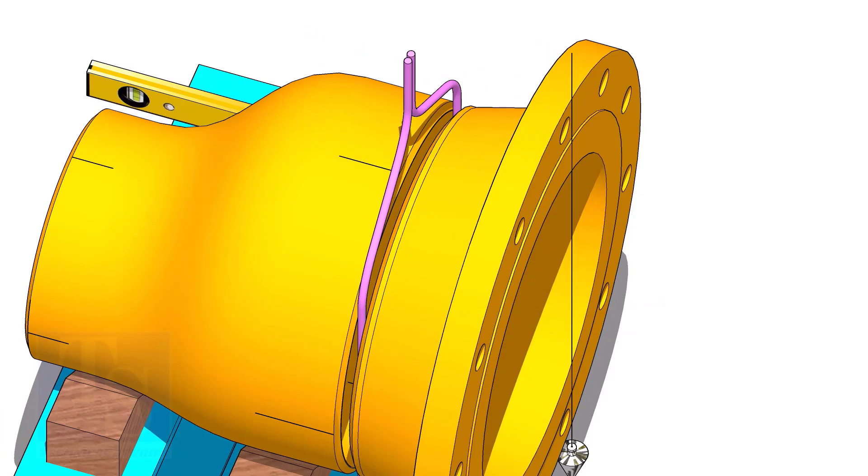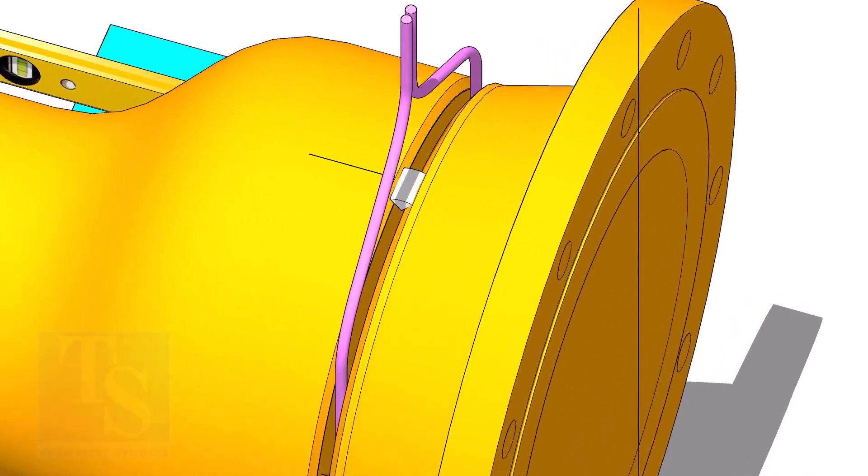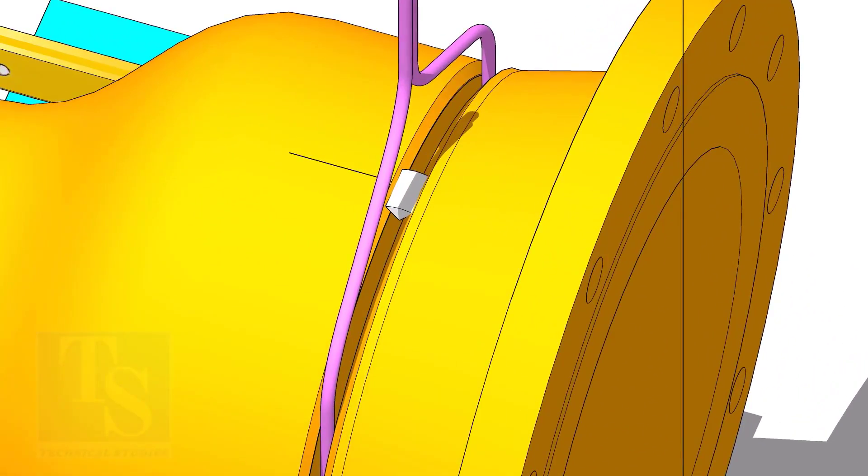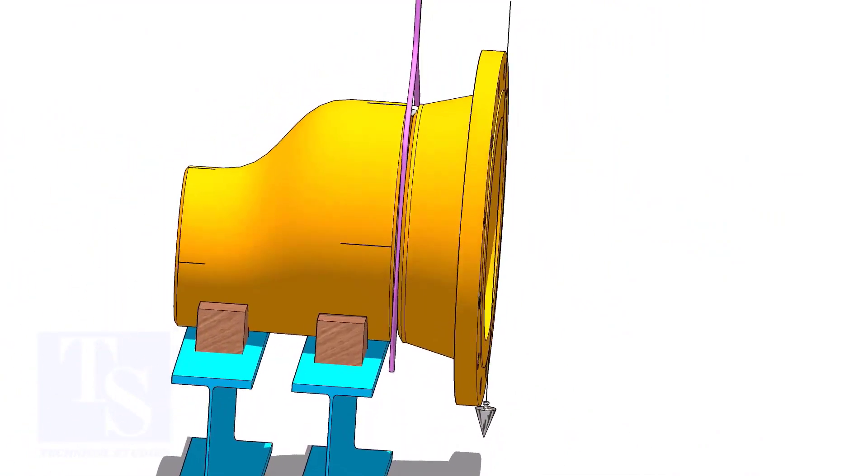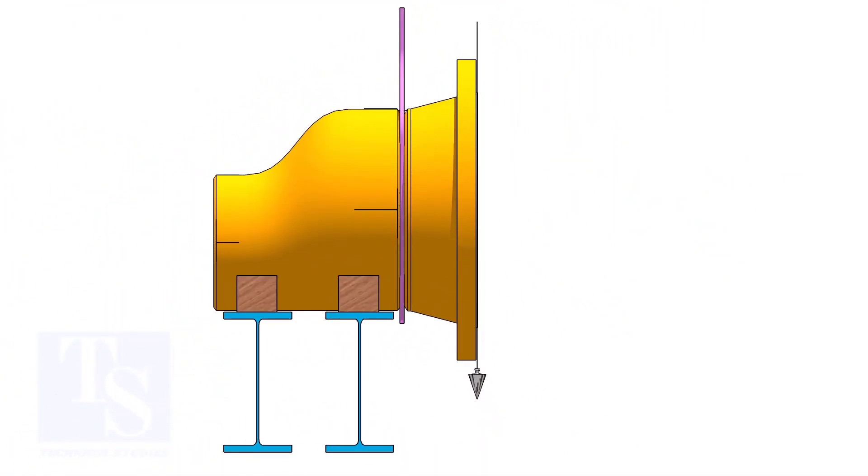Tack weld on the top side of the joint. Check the vertical plumbness, if correct, tack weld at the bottom side.